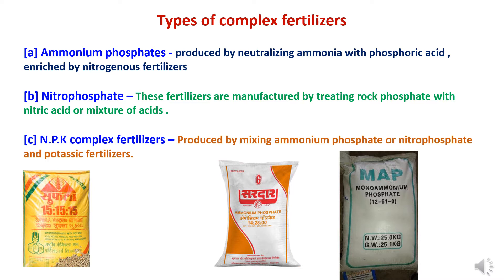First is ammonium phosphates — these fertilizers are produced by neutralizing ammonia with phosphoric acid and are enriched with nitrogenous fertilizers. Second is nitrophosphates — these are manufactured by treating rock phosphate with nitric acid or a mixture of acids. Third is NPK complex fertilizers — produced by mixing ammonium phosphate or nitrophosphate with potassium fertilizers.